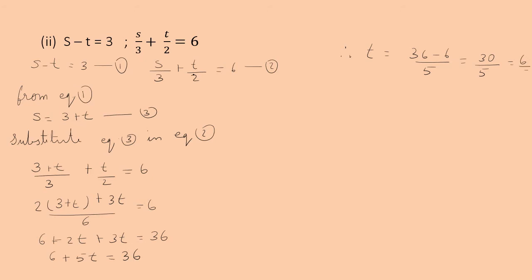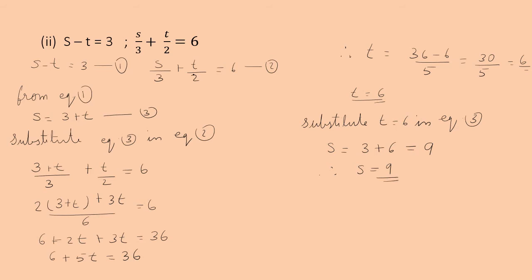Now substitute t = 6 in equation 3: s = 3 + t = 3 + 6 = 9. Therefore s = 9. The solution is s = 9 and t = 6.